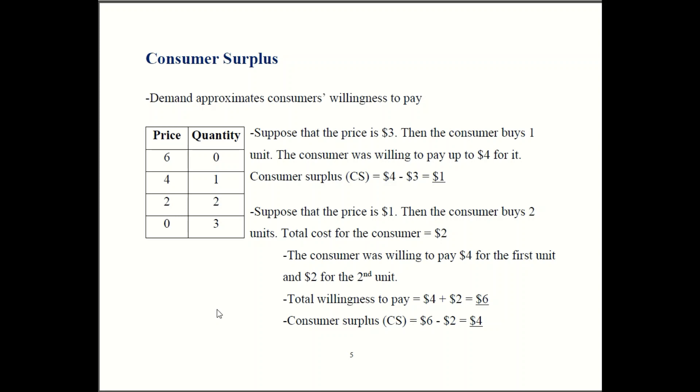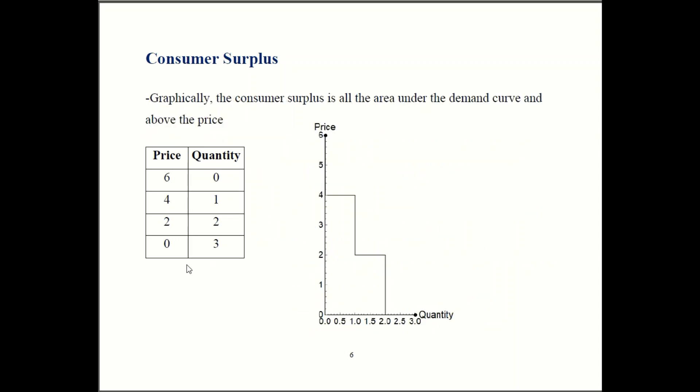Now, it turns out, if you looked at the graph, instead of at this table, the demand schedule, you would have gotten the same answer. So here's our graph. Price is six, buy nothing. So that point six zero is up on our graph. Price is four, we buy one. That's over here, also on our graph. And so on for these other points. So here's your demand curve. Now in the graph, consumer surplus will be all the area that's below our demand curve, but above the price.